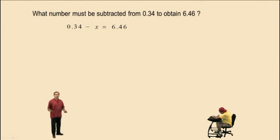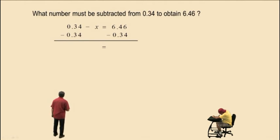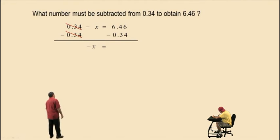Now to solve this equation, we have to isolate that variable term, which is just the x. Since we have 0.34 subtract x, we're going to subtract 0.34 from both sides. 0.34 subtract 0.34 is 0, and 0 subtract x is negative x. On the right-hand side, we have 6.46 subtract 0.34, and we get 6.12.